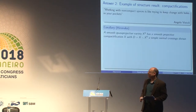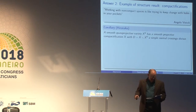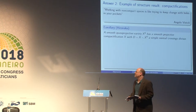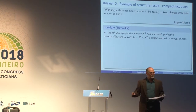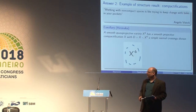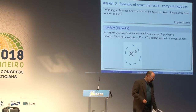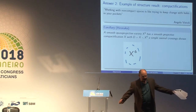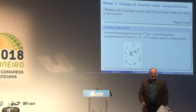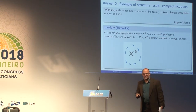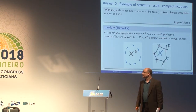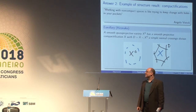Already when Hironaka proved resolution of singularities, he pointed out the following corollary: a smooth quasi-projective variety has a smooth projective compactification whose boundary is a simple normal crossings divisor. That's because every variety has a compactification, and you resolve that compactification in the sense stated.